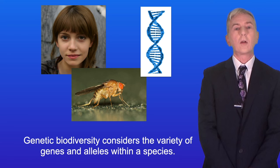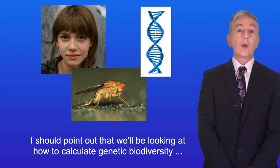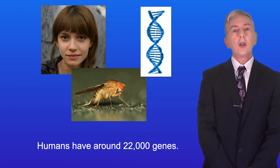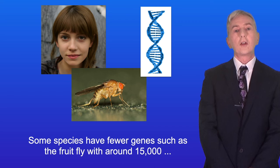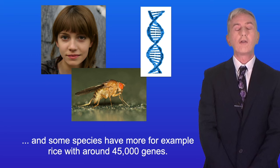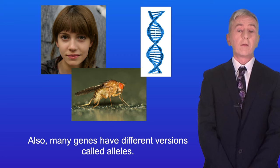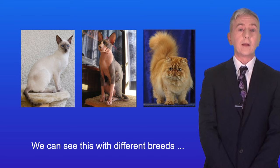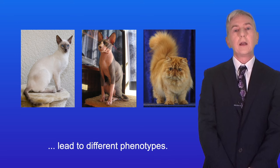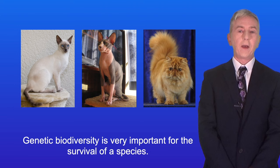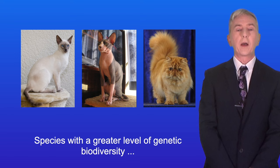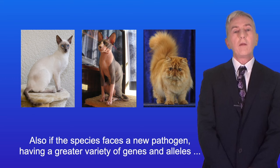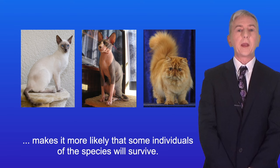Genetic biodiversity considers the variety of genes and alleles within a species, and we'll be looking at how to calculate genetic biodiversity in a later video. Humans have around 22,000 genes. Some species have fewer genes, such as the fruit fly with around 15,000, and some species have more, for example rice with around 45,000 genes. Many genes have different versions called alleles, so the genetic biodiversity of a species depends on the different genes and alleles present. We can see this with different breeds — for example, these breeds of cats — where the alleles present lead to different phenotypes. Genetic biodiversity is very important for the survival of a species: species with a greater level of genetic biodiversity can better adapt to environmental change, and if a species faces a new pathogen, having a greater variety of genes and alleles makes it more likely that some individuals will survive.